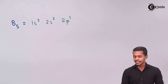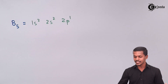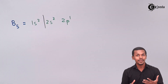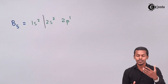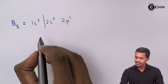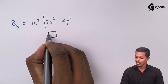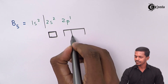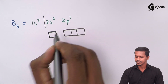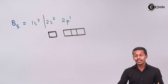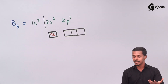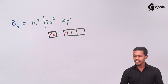We need to focus on the outermost shell, which in this case consists of the 2s and 2p subshells. The s subshell has only one orbital, while the p subshell consists of three orbitals. There are two electrons in the 2s subshell and one electron in the 2p subshell.